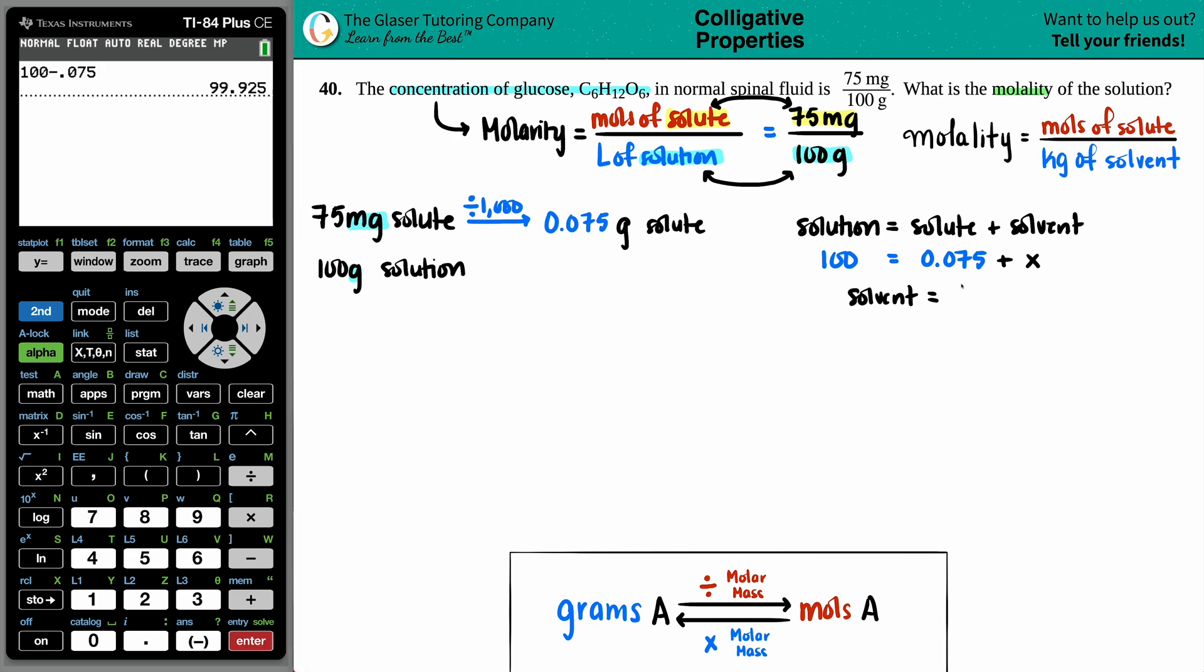I mean, it's very, very close to 100, but we always like to get the exact values. So my solvent amount, I have 99.925 grams of the solvent.